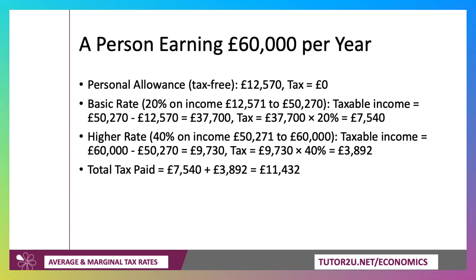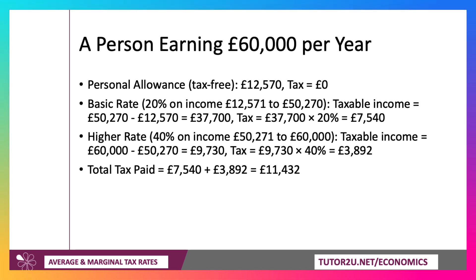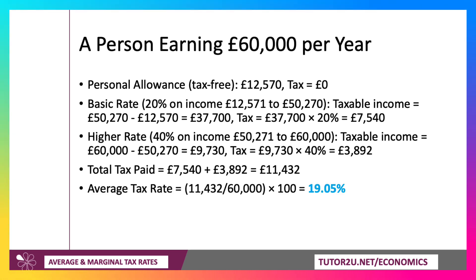What about somebody earning £60,000 a year? Again, everybody has that tax-free allowance, so no income tax on the first £12,570. They would then use up pretty much their full 20% rate band, paying £7,540 at 20%. That leaves £9,730 to be taxed at 40%. So they pay two blocks of tax, totalling £11,432.